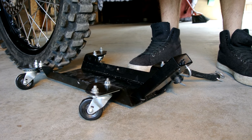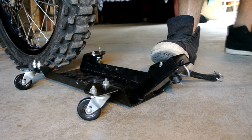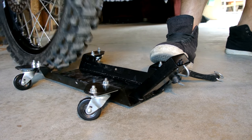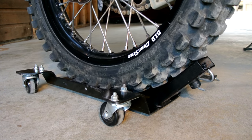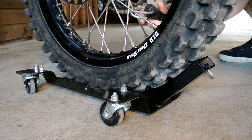So to load this, you line the wheel dolly up with the rear tire, put your foot on the dolly, and then ride it right up onto that wheel stop and then throw your strap over it.